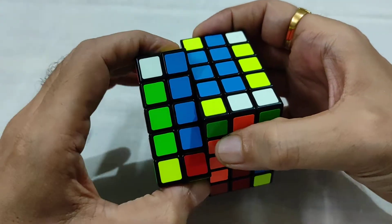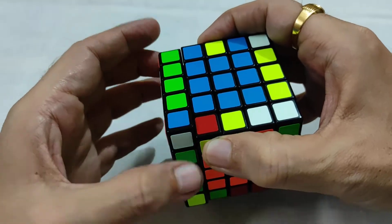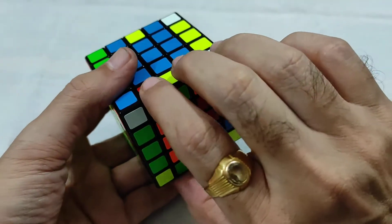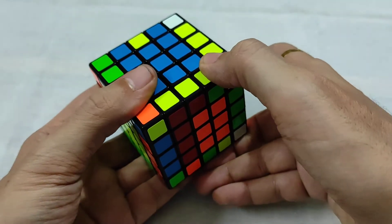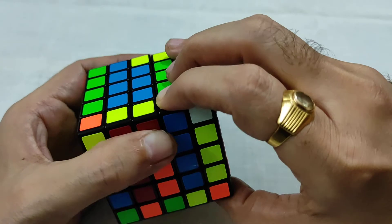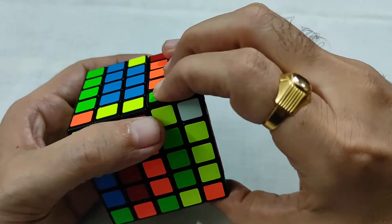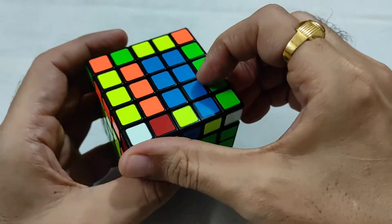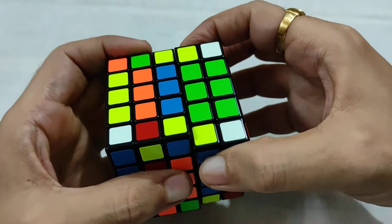Now we have to bring it up, only middle layer, L prime. So since it is left, again 2F. Now R2, so since it is right side, 2U, R.